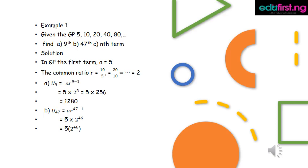For part (a), the 9th term: u_9 equals a times r raised to power 9 minus 1, equals 5 times 2 raised to power 8, equals 5 times 256, equals 1280.